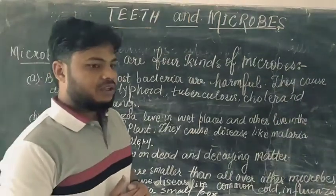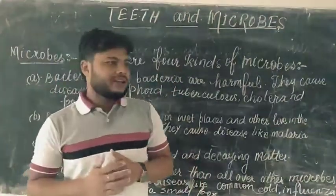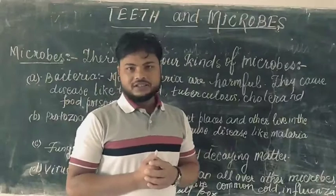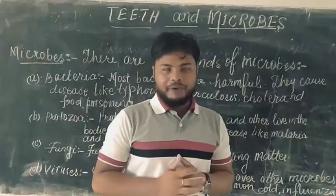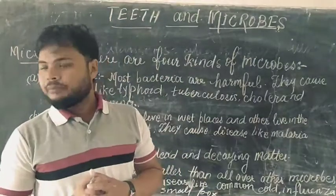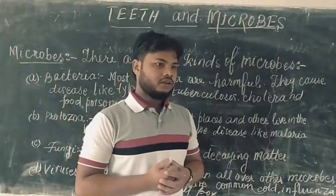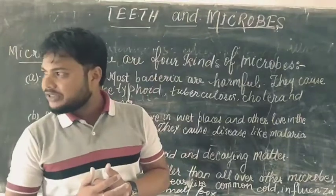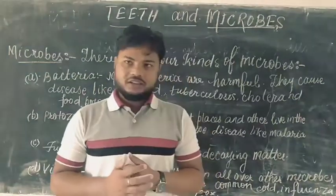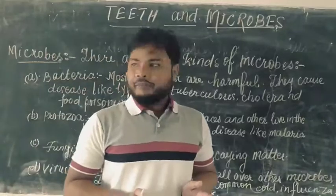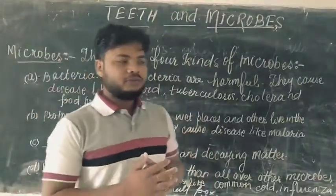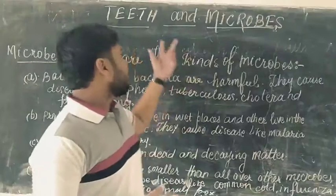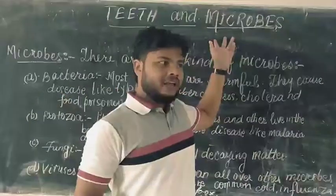Microbes are very tiny organisms which cannot be seen with the naked eye. We can see microbes using an instrument called a microscope. Microbes are also living things — they fulfill the same criteria as other living organisms.